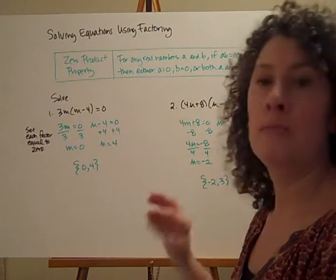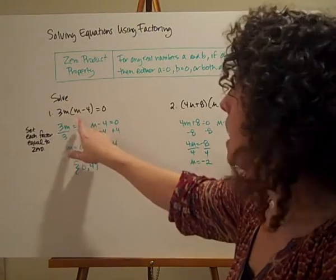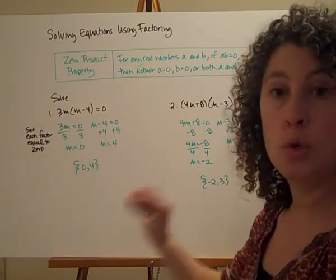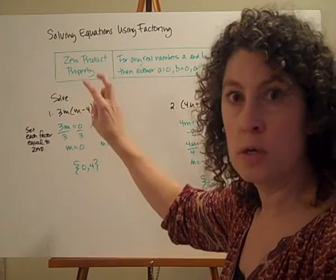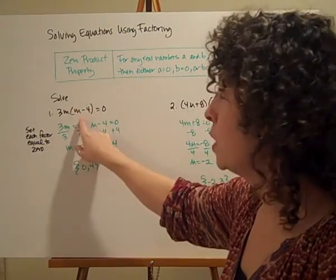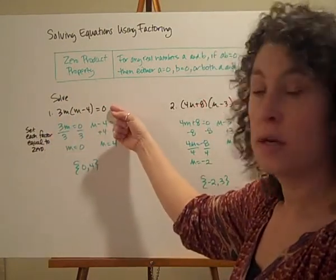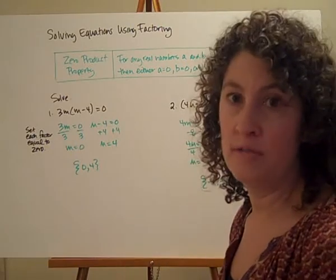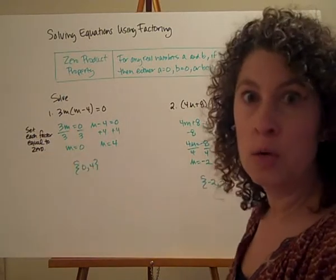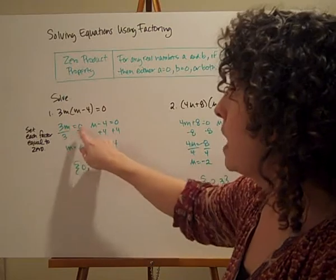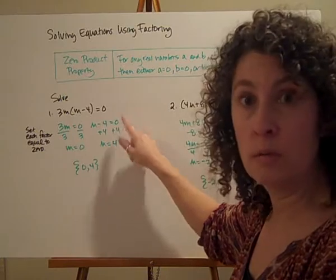Let's look at some very simple equations to start. Say I've got 3m times the quantity m minus four, set equal to zero. Notice what I have here is two factors — a monomial and a binomial that I'm multiplying together to get a product of zero. Since I'm multiplying these two together to get zero, I know that at least one of them, or maybe both, has to equal zero. So I can break them apart and set each factor equal to zero: 3m equals zero, and m minus four equals zero.